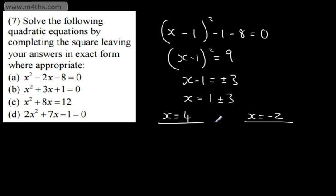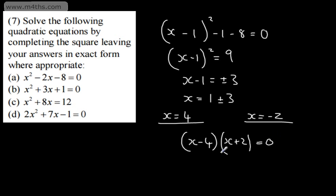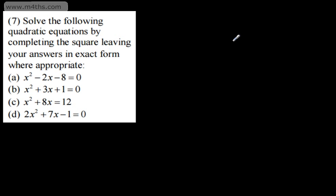Those are the solutions by completing the square. Note this one actually does factor: (x-4)(x+2)=0, giving x=4 or x=-2 — confirming our answer. Exact form means leaving answers in surd form, which we'll see shortly.